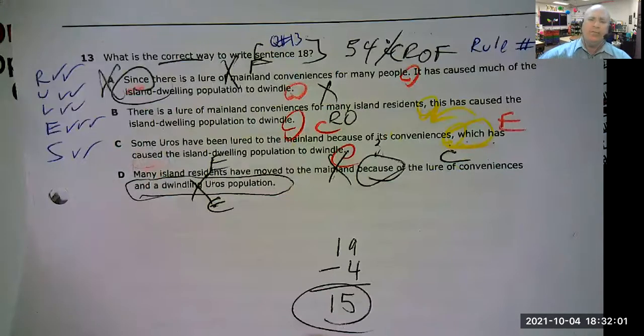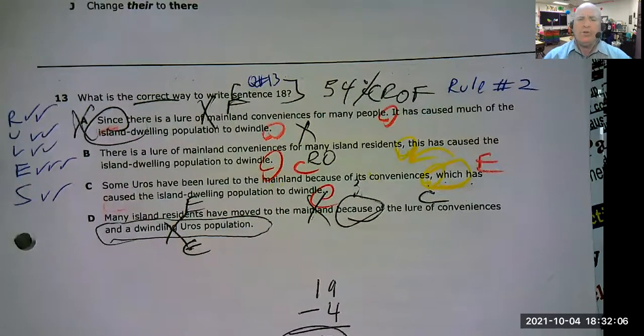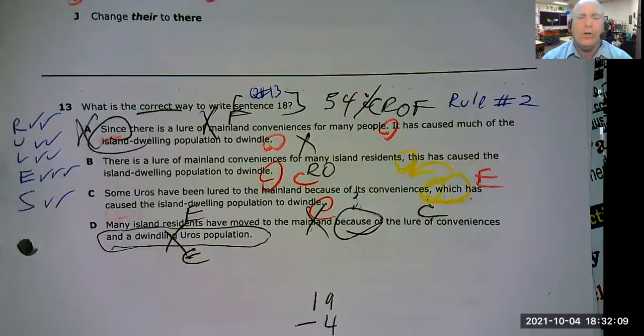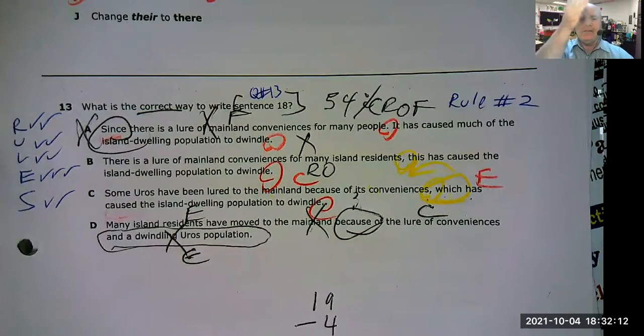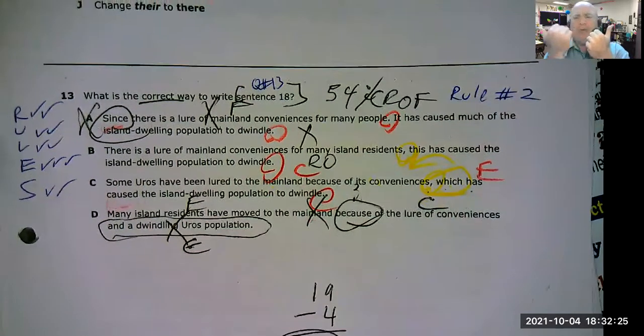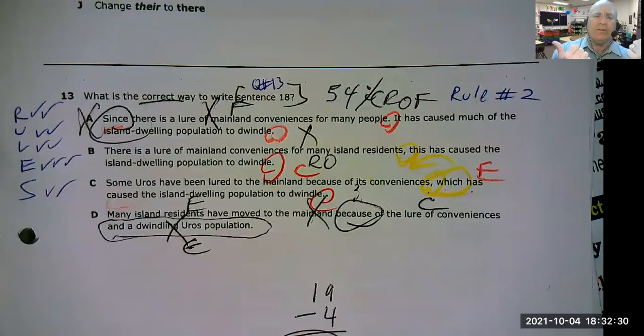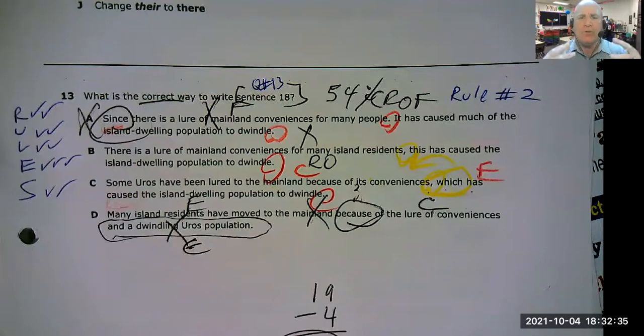So when people ask me, Bill, do you think on editing, we should read the entire passage? No, it is a waste of time, because they're only asking you to check the editing on four of those sentences. So at most, you would check the sentence before and a sentence after, or two sentences before or two sentences after, to sometimes check for usage to see subject verb agreement, or how it's being used in context.